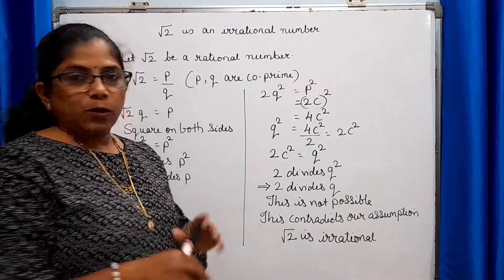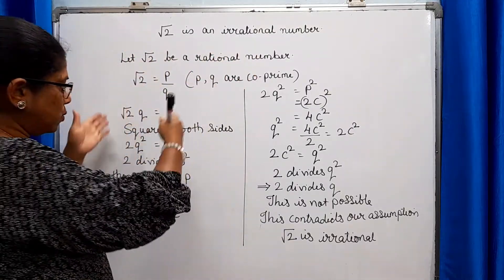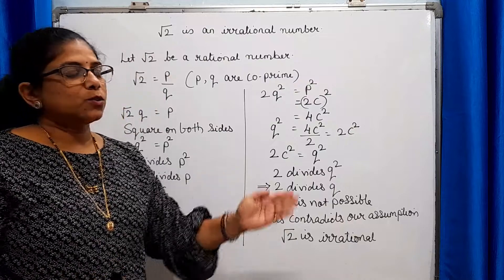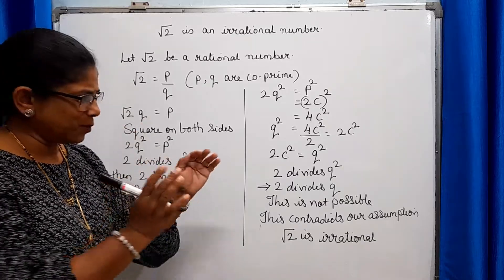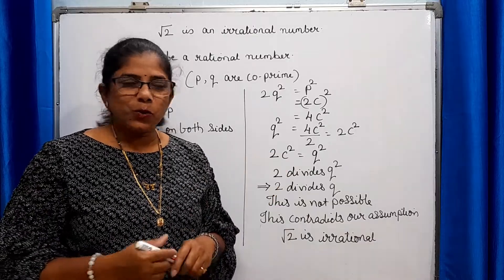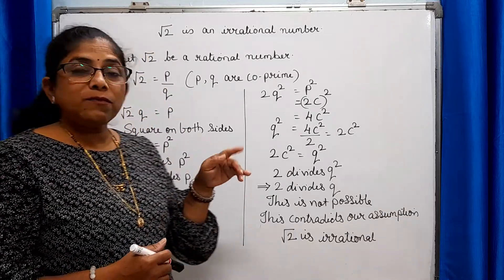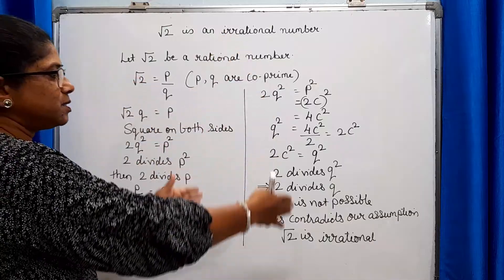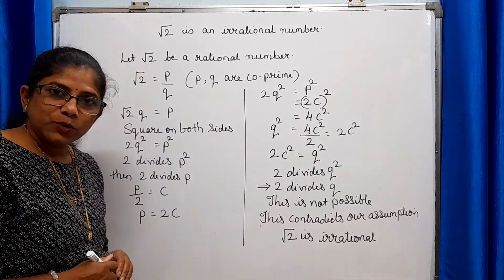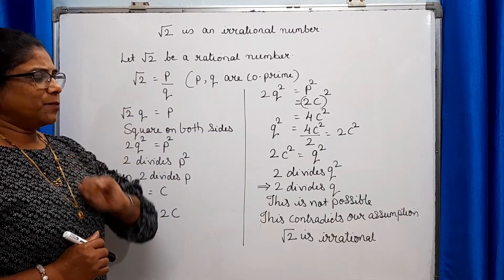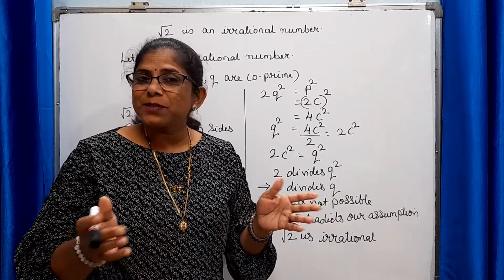That's it. So there are only two possibilities: root 2 is either rational or irrational. We considered it as a rational number, which turned out to be wrong and not possible. So the only other possibility left is that root 2 is irrational. Similarly, if they ask you to prove that root 3 or root 5 is an irrational number, you can follow the same approach. Hope this is quite clear. If you want updates of such useful videos, subscribe to our channel, and please share these videos among your friends.